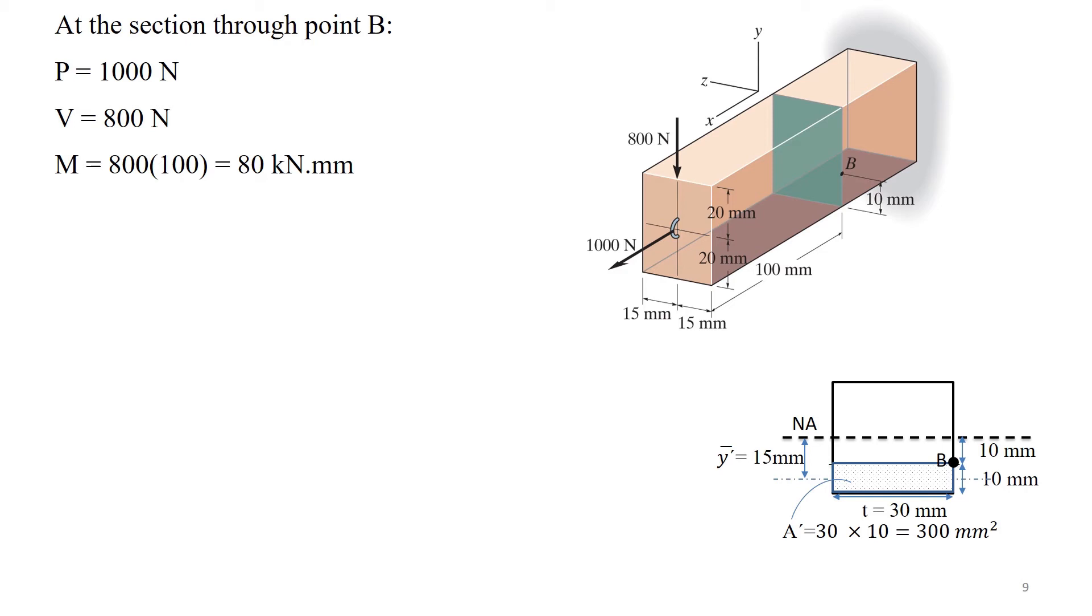The third step is to determine the stress components associated with each internal loading. Stress caused by axial load P can be calculated by dividing the load P by the cross sectional area, which is 40 mm times 30 mm. Thus, the normal stress caused by axial load P is 0.833 MPa.